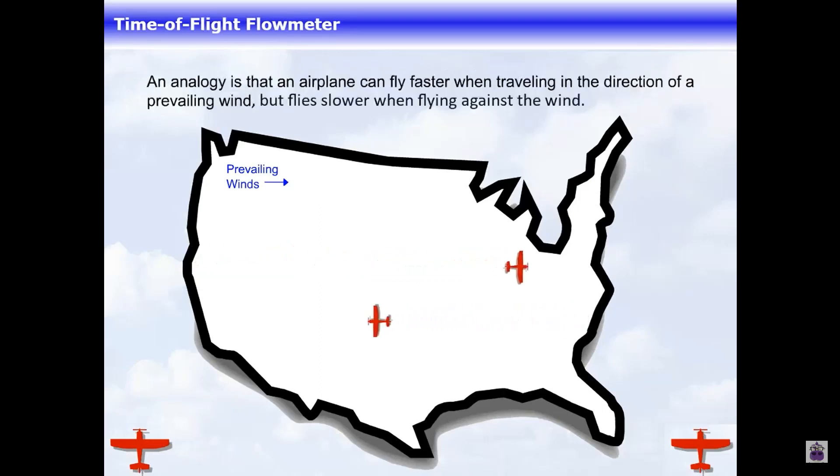An analogy is that an airplane can fly faster when traveling in the direction of a prevailing wind, but flies slower when flying against the wind.